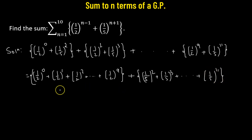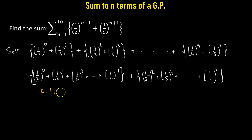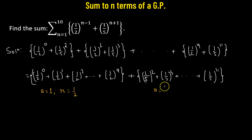Now we have two geometric progressions. For the first geometric progression, the first term is one-half raised to the power of 0, so that's simply 1, and the common ratio r is one-half divided by 1, which is simply one-half. For the second case, the first term equals 1 over 5 squared, so that's 1 over 25, and the common ratio r equals 1 over 5.